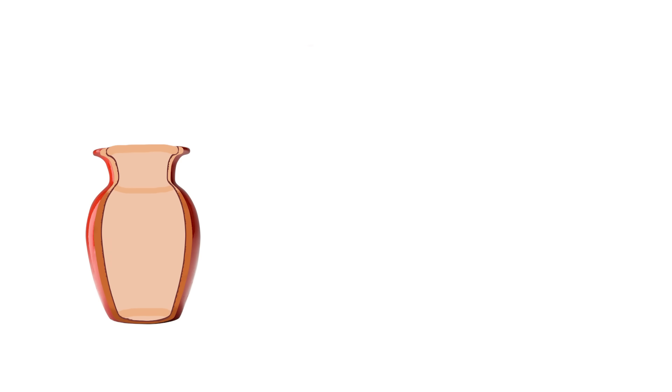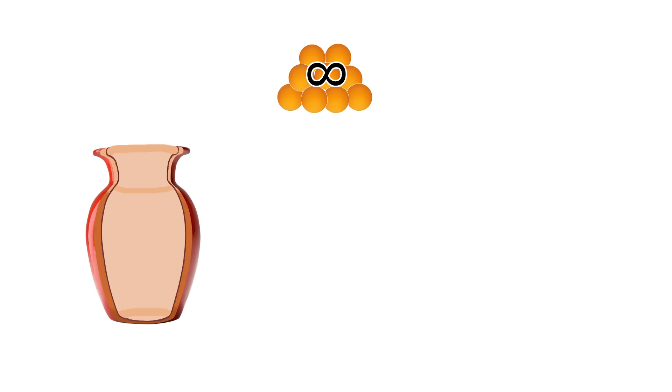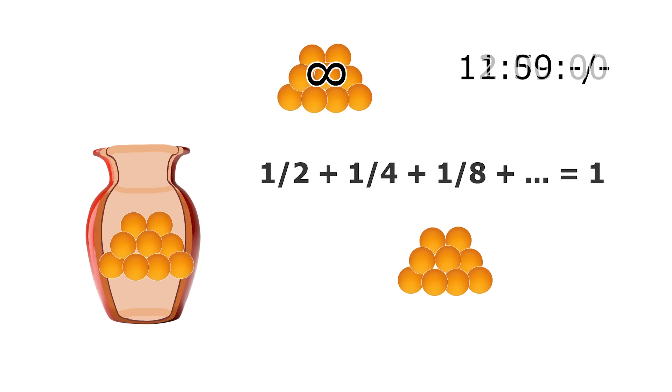The problem starts with an empty vase and an infinite supply of balls. An infinite number of steps are then performed, such that at each step 10 balls are added to the vase and one ball removed from it. The question is then posed, how many balls are in the vase when the task is finished? To complete an infinite number of steps, it is assumed that the vase is empty at one minute before noon, the first step is performed at 30 seconds before noon, the second step is performed at 15 seconds before noon, and each subsequent step is performed in half the time of the previous step. Because math, before noon hits, you will have completed an infinite number of tasks.